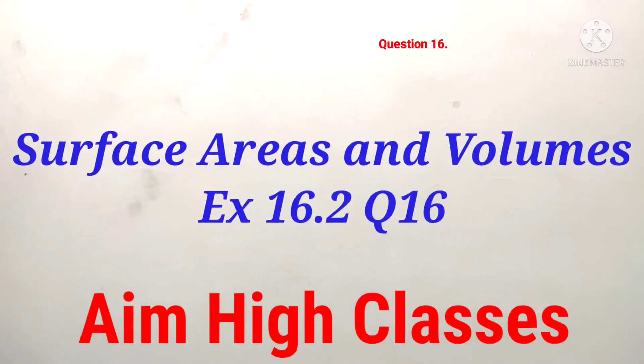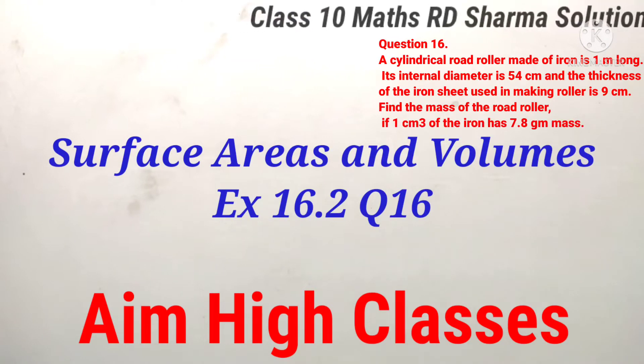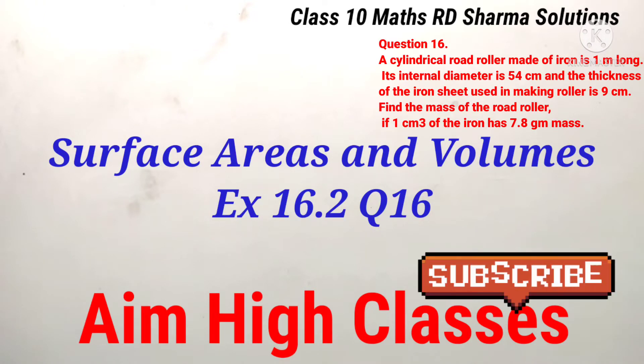Let's start question number 16. A cylindrical road roller made of iron is 1 meter long. It is a cylindrical road roller which is given length of 1 meter.